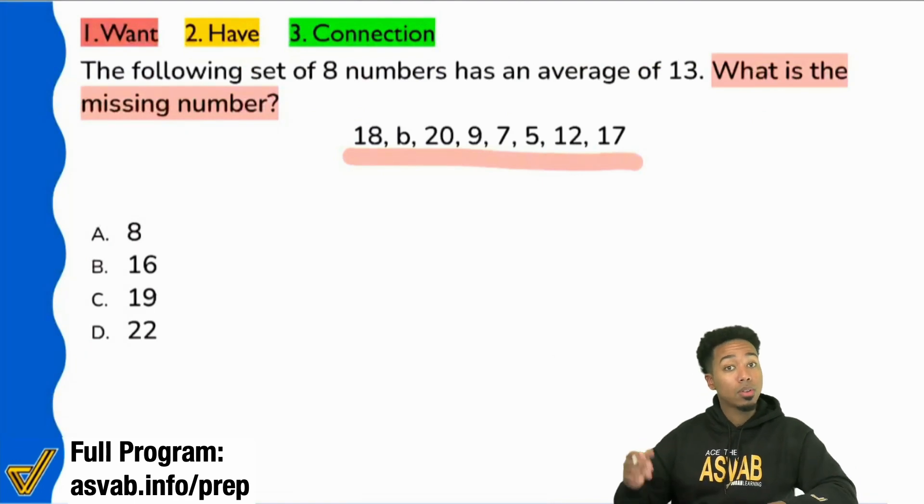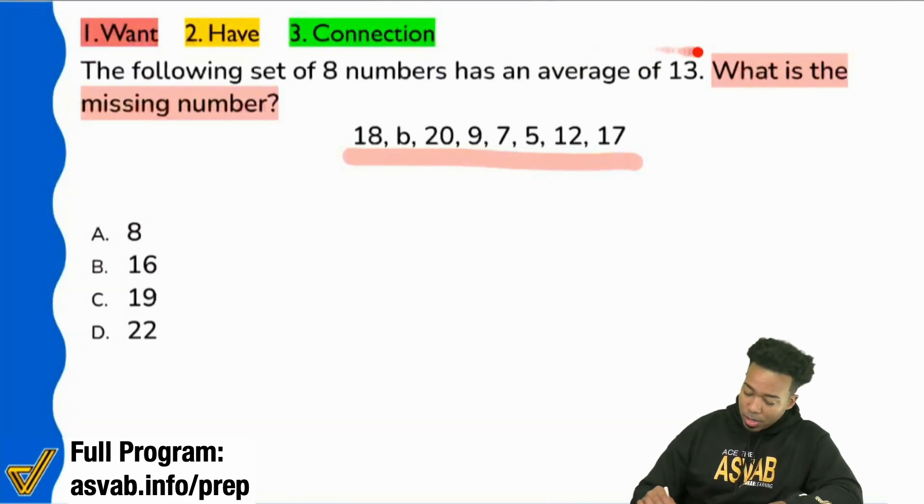Okay, so let's go ahead and do that. The following set of eight numbers has an average of 13. What's the missing number? We have a missing number right there. That's b. Sweet.